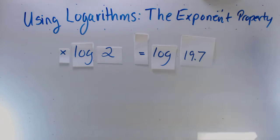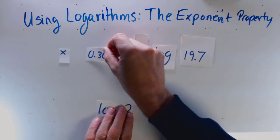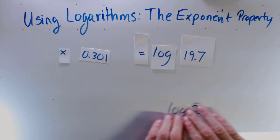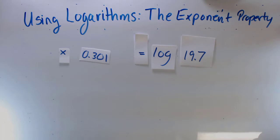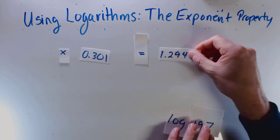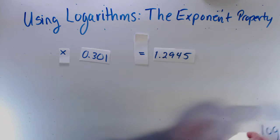You can use log base 10, you can use the natural log. The log of 2, accurate to about four decimal places, is 0.301, and the log of 19.7 is 1.2945, accurate to four decimal places.